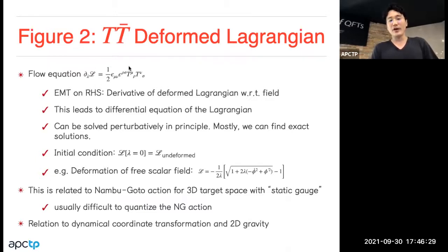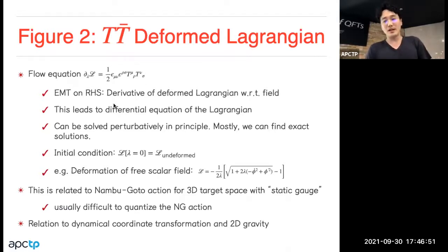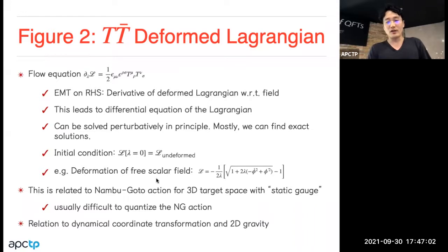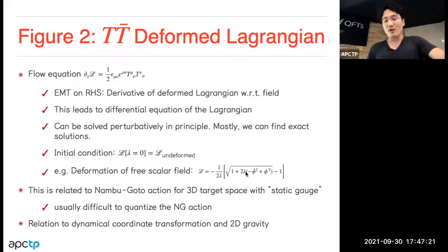The second interesting feature is the deformed Lagrangian. This is the flow equation of the TTbar deformation; the right-hand side has the energy-momentum tensor, which is the derivative of the Lagrangian with respect to the field. This is essentially a differential equation for the Lagrangian, which we can solve perturbatively, and usually we know the exact answer at least classically. The initial condition is the undeformed Lagrangian. For example, for the free scalar field we obtain a square root Lagrangian, which is related to the Nambu-Goto action for 3D target space.